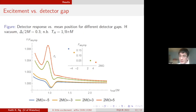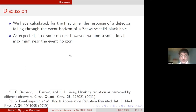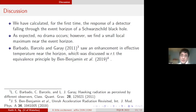To summarize, we have calculated for the first time the response of a detector falling through the event horizon of a Schwarzschild black hole. As we might have expected, there's no drama per se, but we do find a small local maximum near the event horizon. This isn't entirely unprecedented. Barbado, Barceló and Garay in 2011 saw an enhancement in effective temperature near the horizon, and this was discussed further with respect to the equivalence principle by Benjamin et al in 2019.